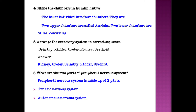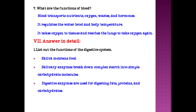Sixth question: What are the two parts of the peripheral nervous system? The peripheral nervous system is made up of two parts: somatic nervous system and autonomous nervous system. Seventh question: What are the functions of blood? Blood transports nutrients, oxygen, waste and hormones. It regulates the water level and body temperature. It takes oxygen to the tissues and returns to the lungs to take oxygen again.